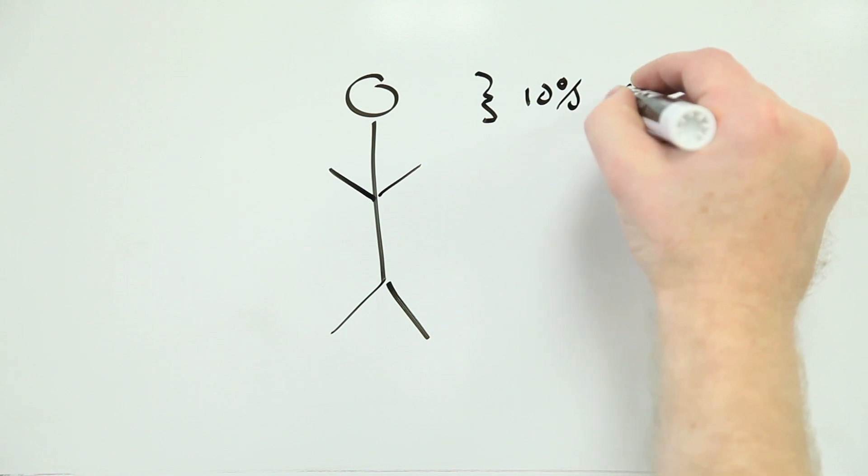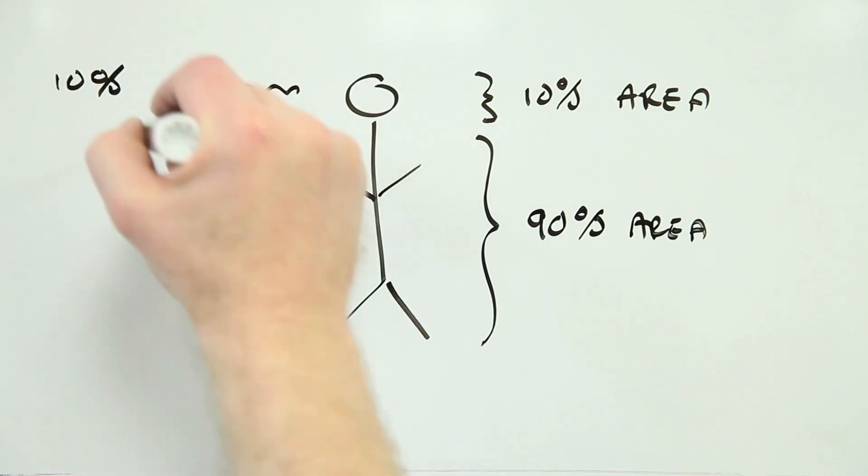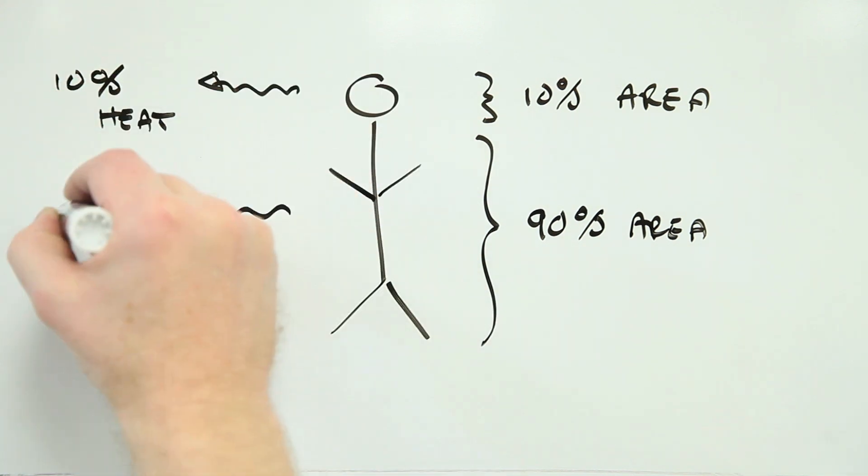We now know that body heat loss is related to how much skin you expose, not which part of your body you're exposing. And as the head of your average naked dancer represents around 10% of their total body area, it'll also account for just 10% of their heat loss. In other words, that hat won't make too much difference.